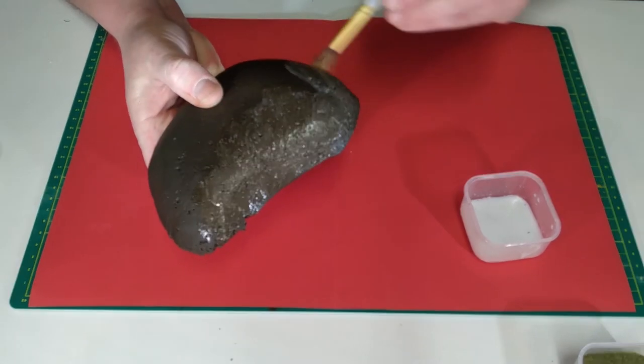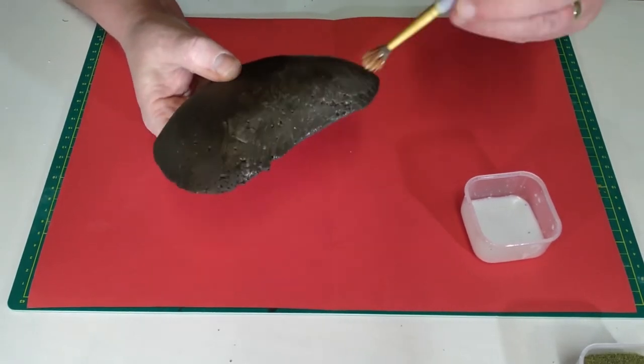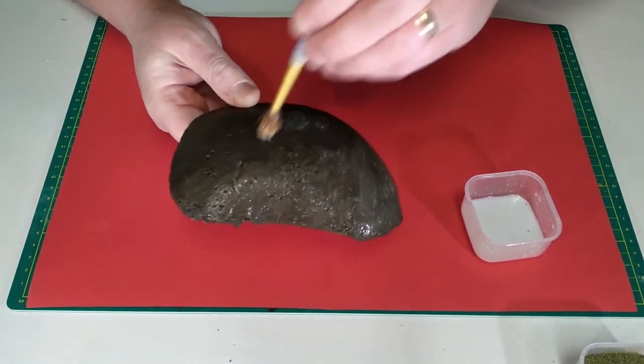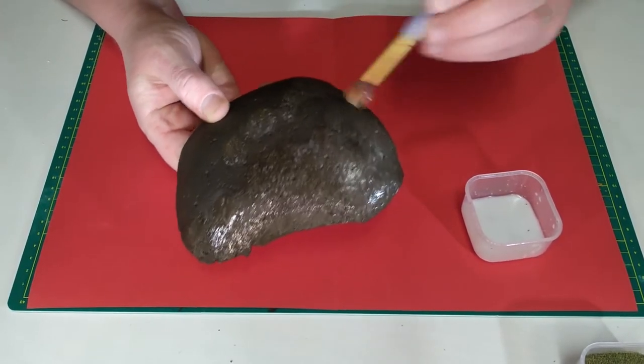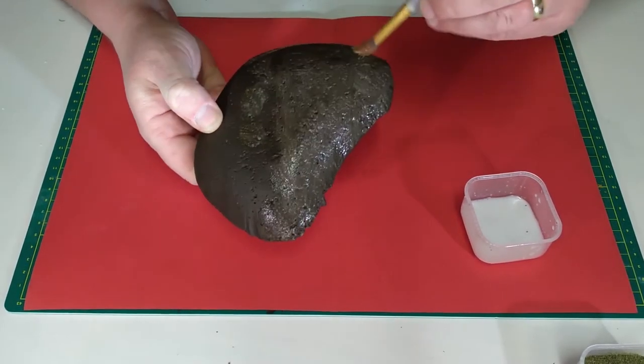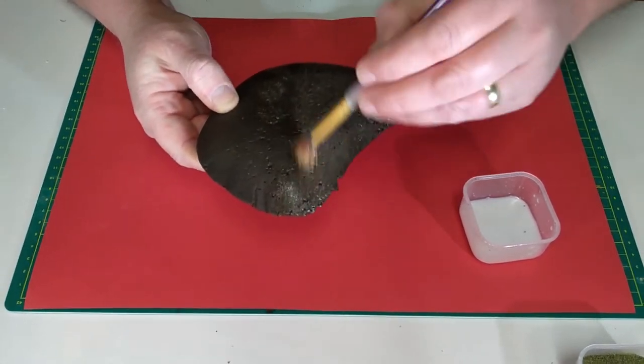Using a paintbrush, paint the PVA glue onto the hill. For this tutorial I'll do one side of the hill completely covered in grass, and on the other side I'll do a rough stippling effect to create areas of patchy grass. As you can see, there are some dry areas where the flock will not adhere to.